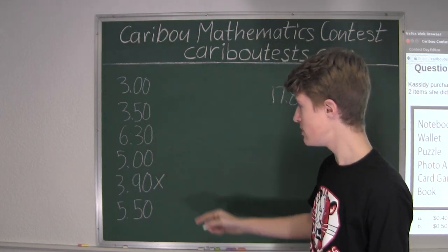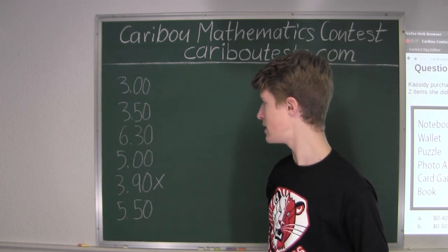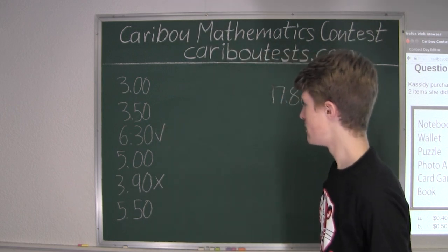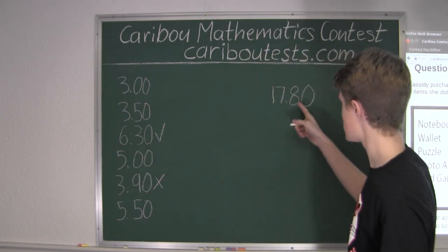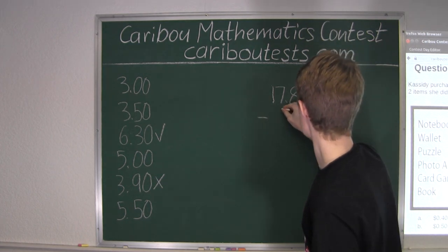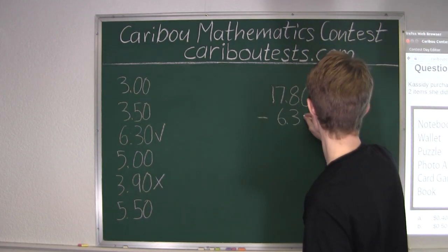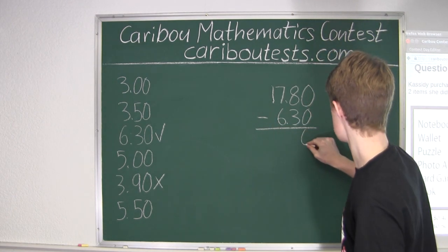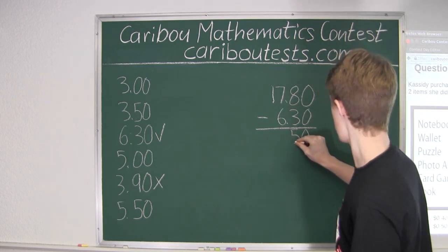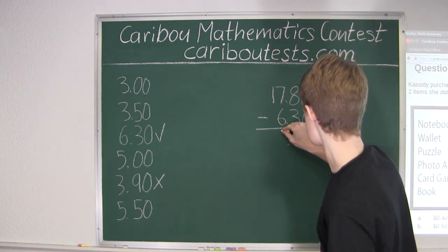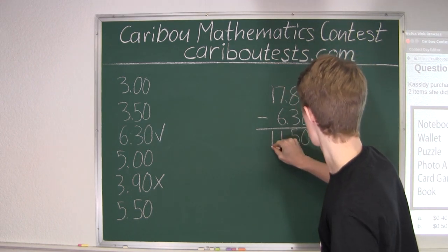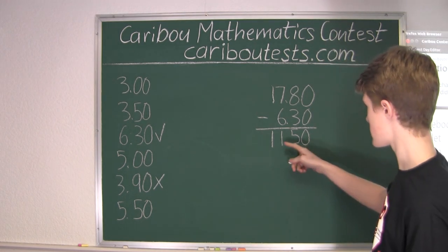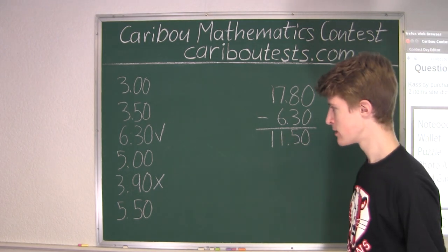Which means that she must have purchased this item for $6.30. Now we will subtract $6.30 from the total. 0 minus 0 is 0. 8 minus 3 is 5. Putting the decimal. 7 minus 6 is 1. And 1 minus 0 is 1.